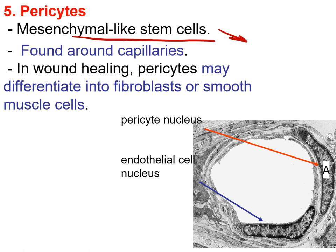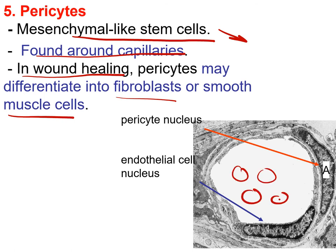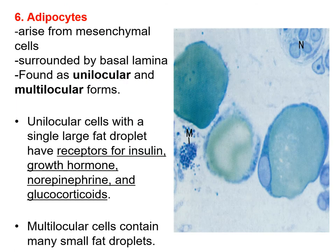The fifth cell type we have is the pericyte. These are mesenchymal-like stem cells that can proliferate and differentiate. They are found around the blood capillaries and are important in wound healing. Whenever we have a cut in our connective tissue, these cells are important because they can differentiate into fibroblasts and smooth muscle cells. The cell found outside and surrounding the blood capillary is called the pericyte.